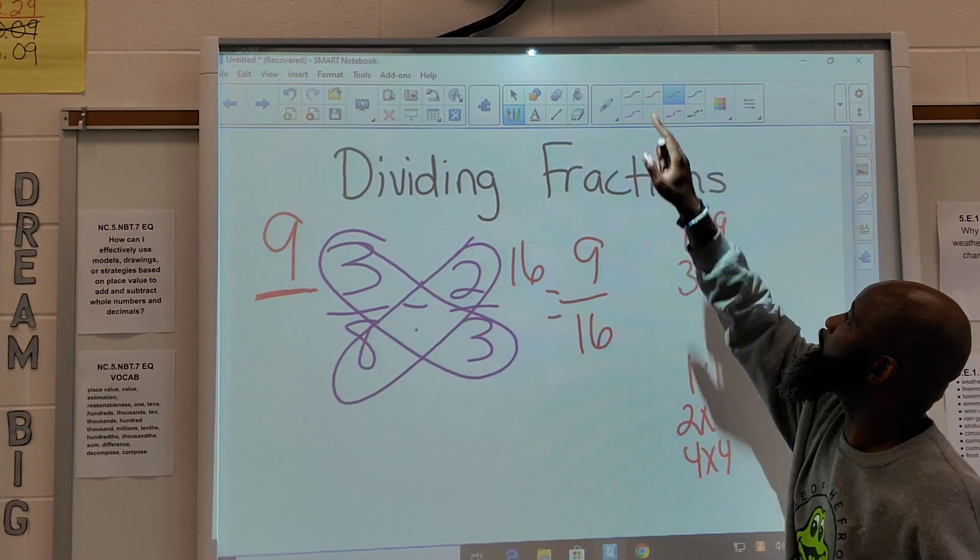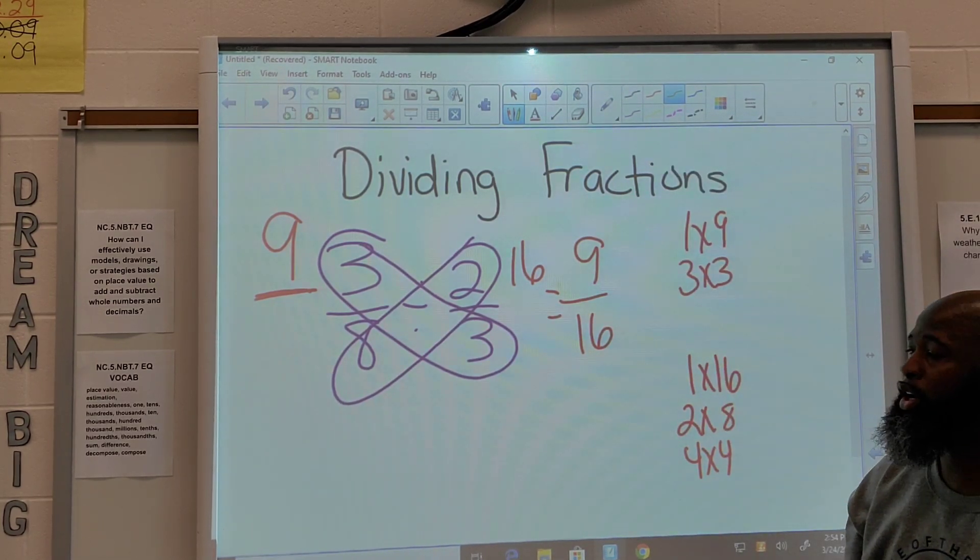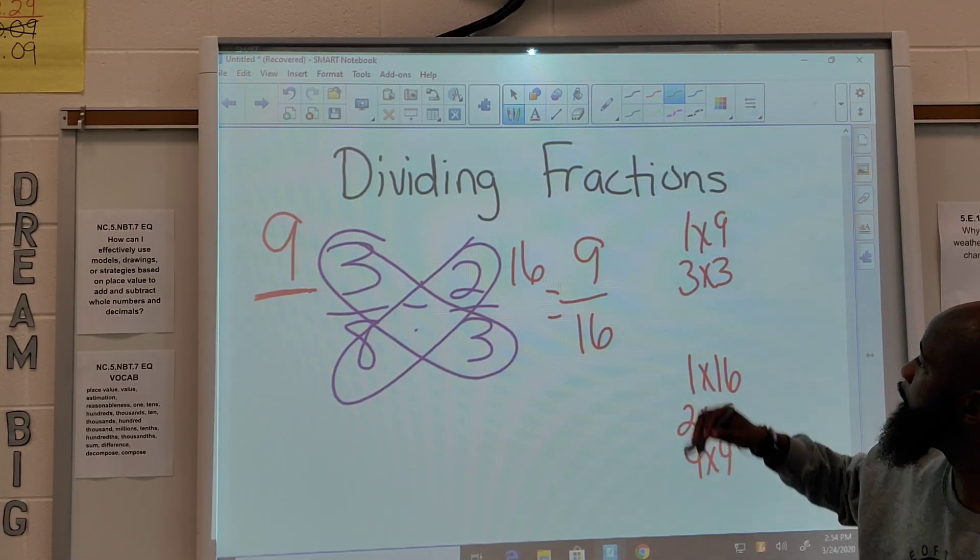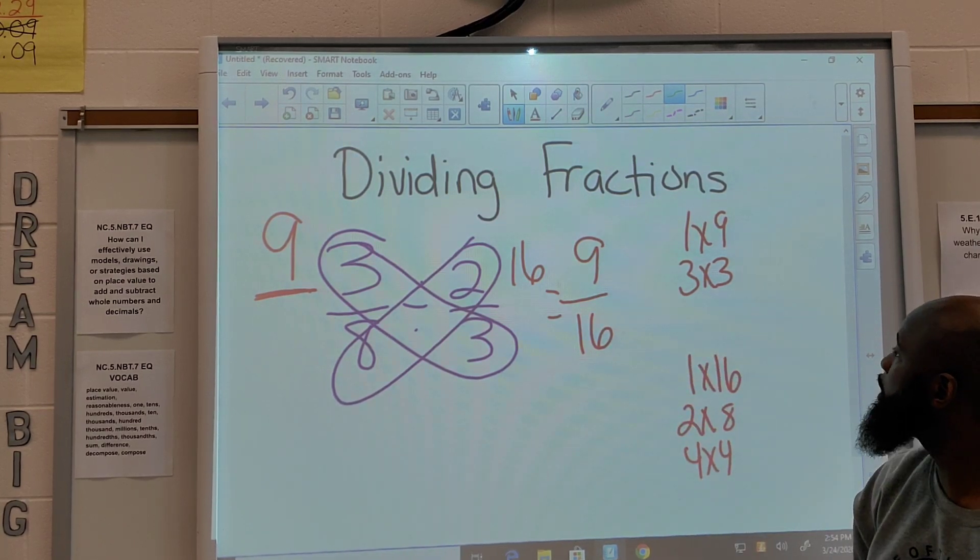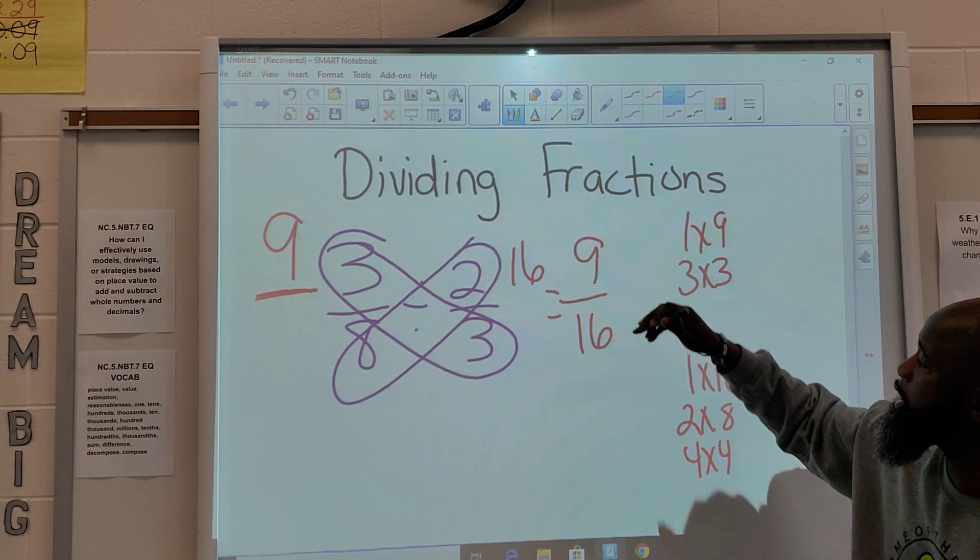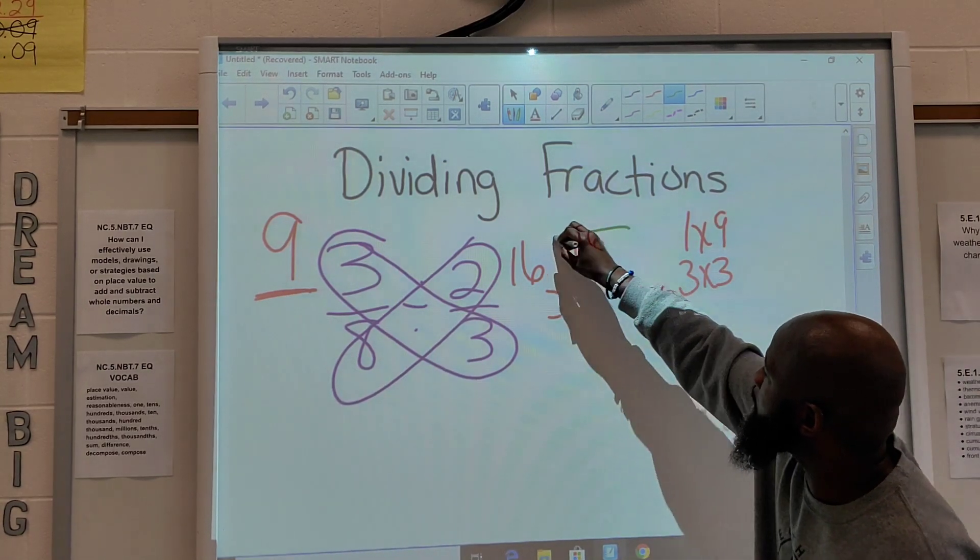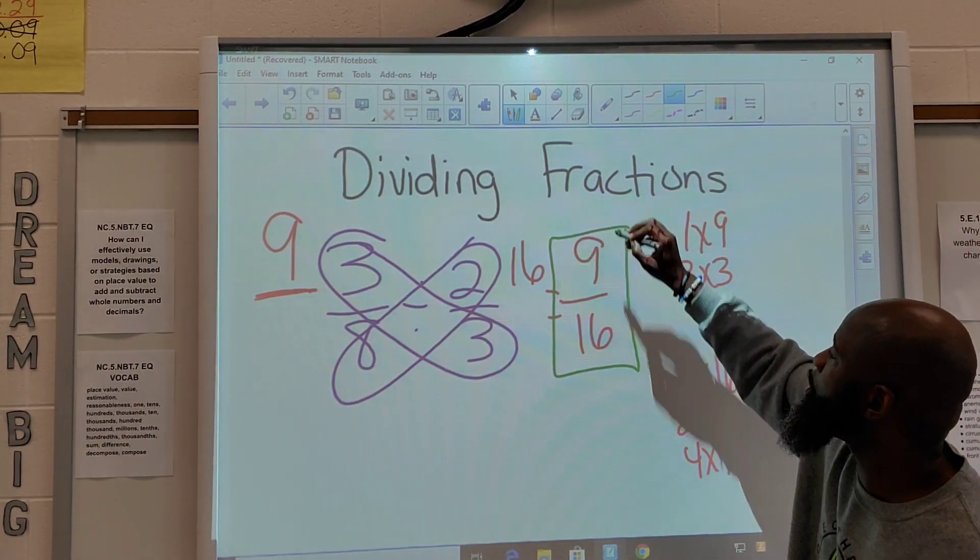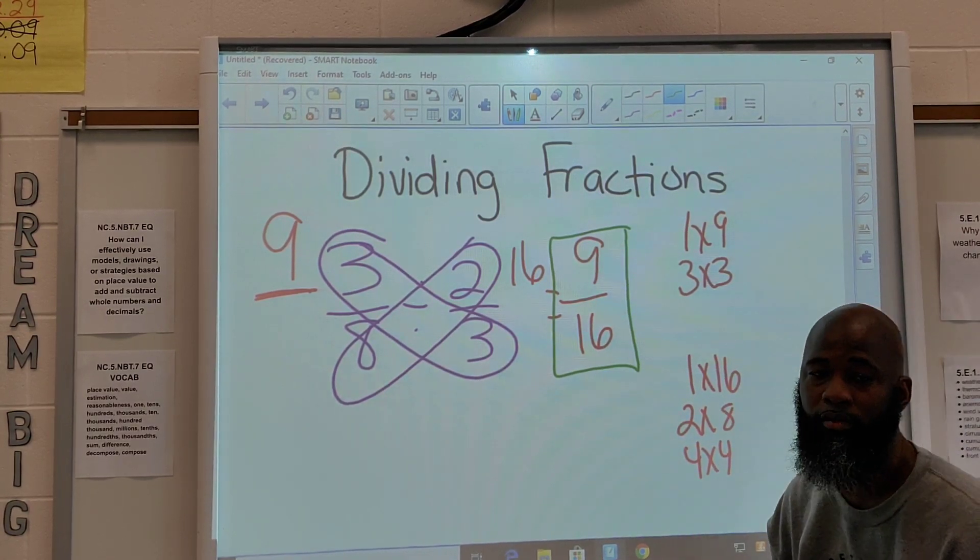So, just based off these numbers, what is the greatest common factor that both 9 and 16 share? And there is none. So, in this case, 9 over 16 is your answer and it's already in simplified form because they don't have any common factors involved.